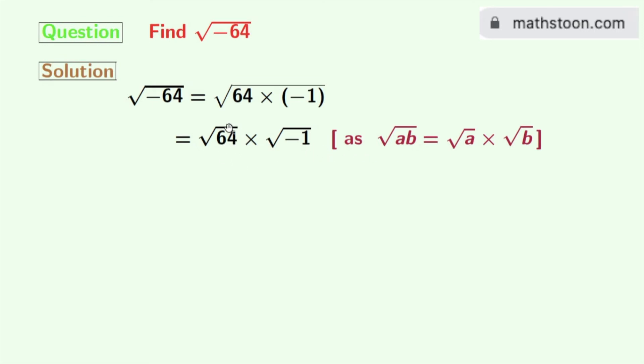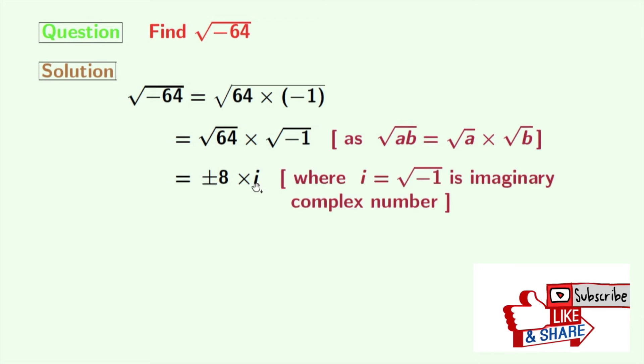Now we all know that square root of 64 is plus minus 8 and square root of minus 1 is i. Here i is an imaginary complex number and its value is root over minus 1. After multiplying these two we get plus minus 8i.